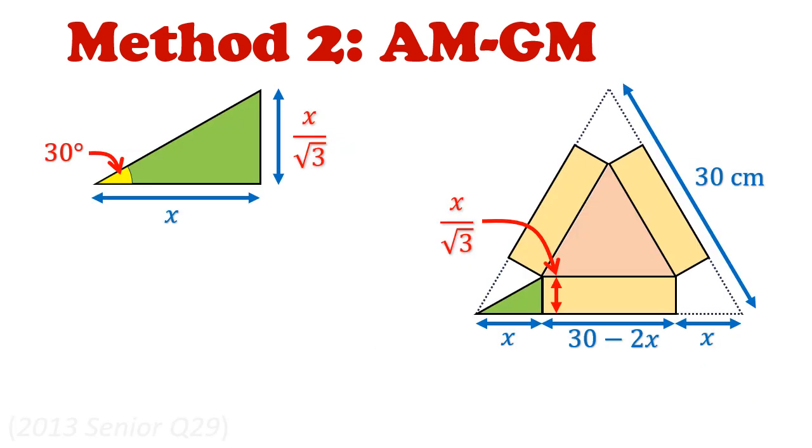The first part of this solution mirrors Method 1, the calculus method, in setting the same x variable. The height will also be x over square root 3. The key difference is that instead of a leftover length of 30 minus 2x, it will be easier to set the leftover as a new variable y. But we note the constraint that 2x plus y has to be the length of the equilateral triangle, which is 30. So we are bounded by 2x plus y equals 30.